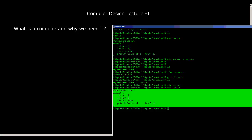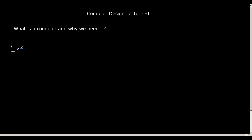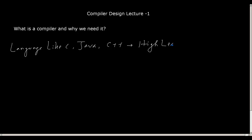This C program is called a high-level language — like C, Java, or C++. They are called high-level languages because they are written in a more abstract manner and we can put directly our thoughts into a program in terms of these languages. That is why they are called high-level language. But a normal computer cannot understand this high-level language.